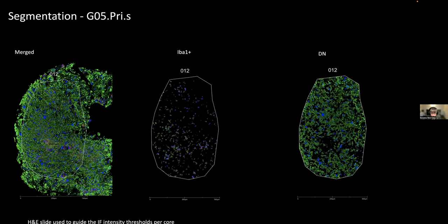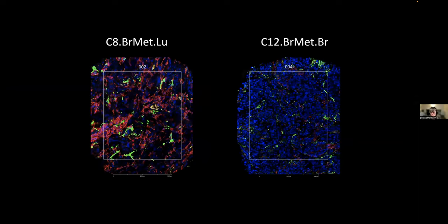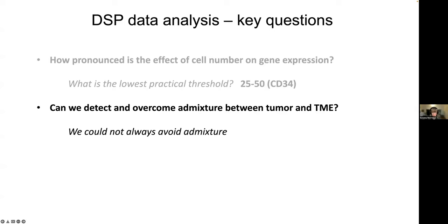Here's another case where there are IBA1 cells but we definitely see green in that channel. Here's a case where there are almost more macrophages and microglia than tumor cells. And here's a couple of the mets — a breast cancer met and a lung met to the brain — which are GFAP negative and densely growing. We have this DSP data and collected lots of transcriptomes. The key question was: given that sometimes our collection was from very few cells, can we detect and overcome the admixture that we know exists between the tumor and the microenvironment?